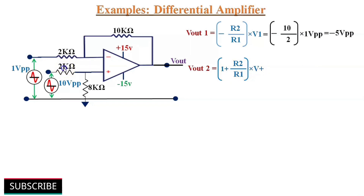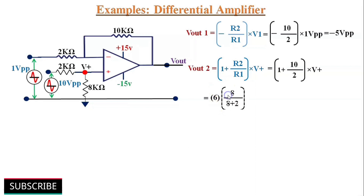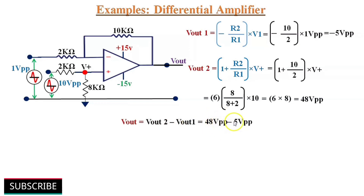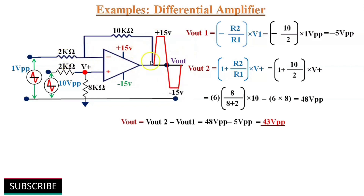V⁺ is the voltage at the non-inverting node. Vout2 = (1 + 10 kΩ/2 kΩ) × V⁺ = 6 × (8 kΩ/(8 + 2 kΩ)) × 10 V = 6 × 8 = 48 V peak-to-peak. So Vout = Vout2 − Vout1 = 48 − 5 = 43 V peak-to-peak. However, since the supply voltage is ±15 V, the output saturates at ±15 V, giving a 30 V peak-to-peak output instead of 43 V.